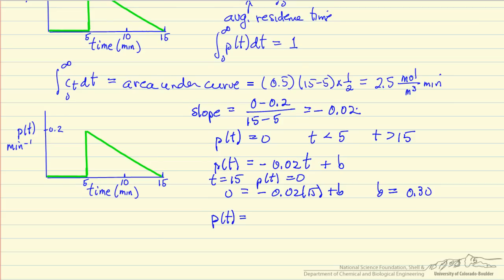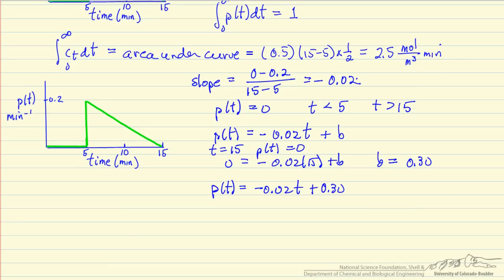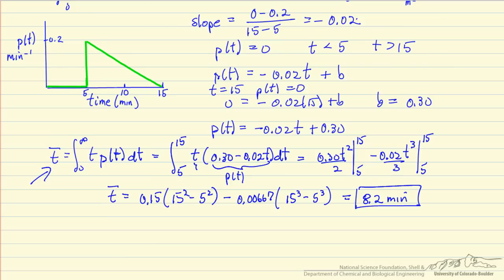So we have an equation for the residence time distribution. And now we can substitute in to calculate our average residence time. So here's the equation that we wrote down earlier for average residence time. We only need to integrate from 5 to 15 minutes because p of t is 0 everywhere else. Put in t, put in p of t, integrate, and I substitute the numerical values in. Then I get an average residence time of 8.2 minutes.